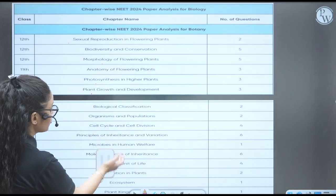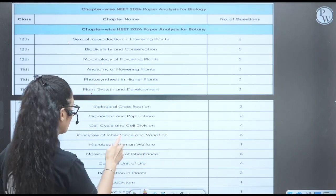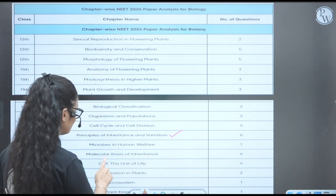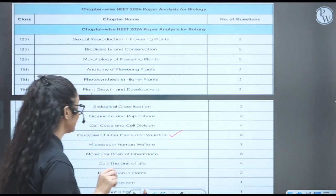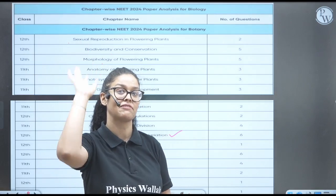Biological classes, so it is the botany part, right? Two. Organism, population, two. Cell cycle cell division, four. Principles basis of inheritance, six questions. Microbes, one. Molecular basis, six questions. So see, from the principal, from the molecular, they have asked six questions. Total, 12 questions from the genetics.